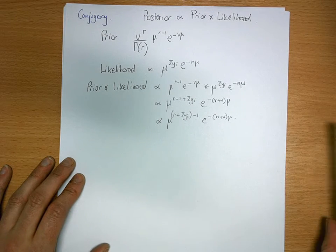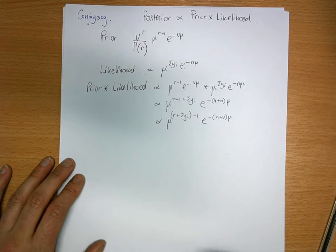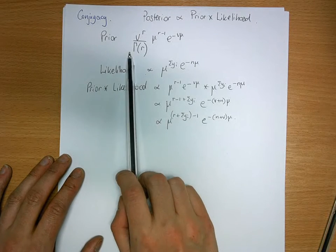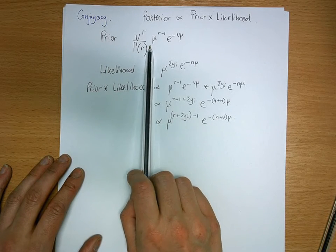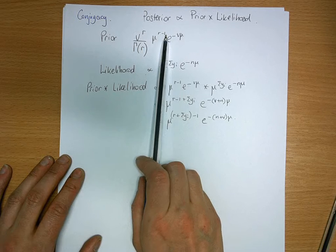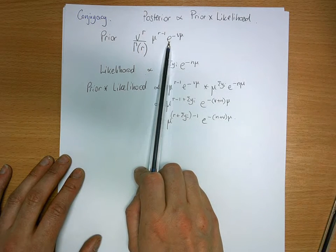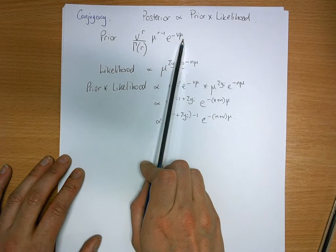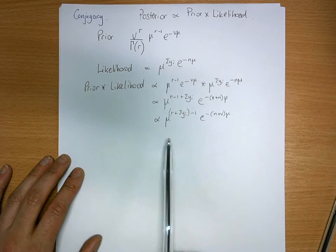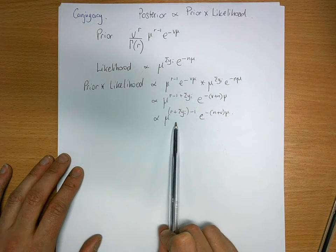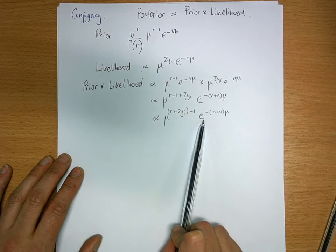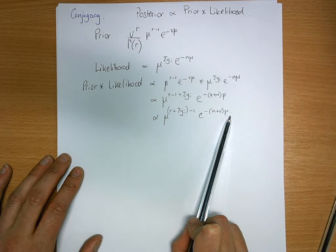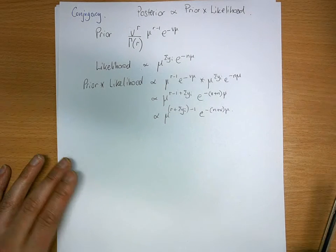I look at my functional form of my prior, and I say it's mu to the something minus 1 times e to the minus something times mu. Here I have mu to the something minus 1, e to the minus something times mu. I do a matchy-matchy job.